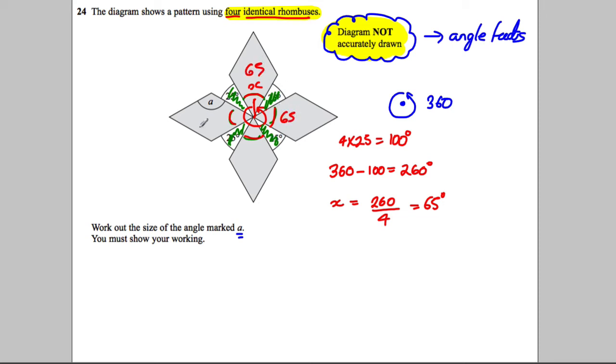So each of these is equal to 65 degrees. They're identical, so that's 65, that's 65, that's 65, and that's 65.